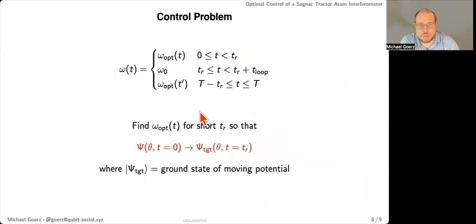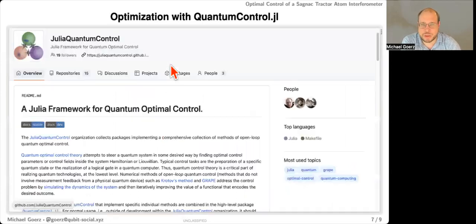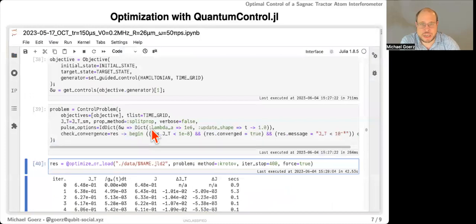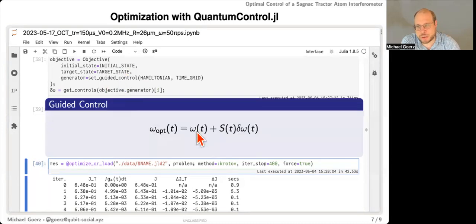So what to do now? Well, you can make this into an optimal control problem where you try to find some new field that gets us exactly to the ground state of the moving potential after the ramp up. And we do this with this new Julia package for quantum control. And if you're interested in this, I would just point you to my talk from the last March meeting. But fundamentally, you can do this by just in a notebook environment where you specify the initial state, you specify the target state, you give it the Hamiltonian. And the one thing you have to be careful about in this case is that we need to make sure about the boundary conditions that we start from zero and we end up exactly at 50 pi per second at t_r. And we do this with this guided control here. So we take the original field and then we add this term where s of t is just some shape that's zero at the beginning at the end and switches on and then stays one for most of the duration. And delta omega is the actual control and that we start out as zero and then we optimize that as a field.